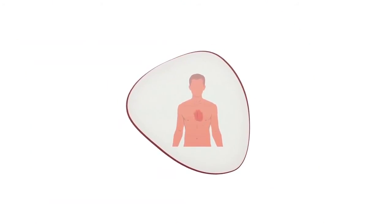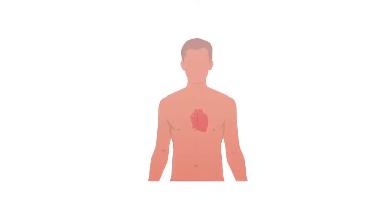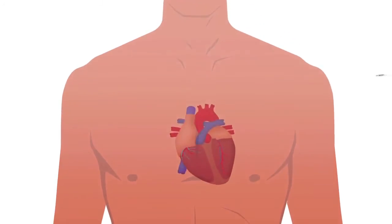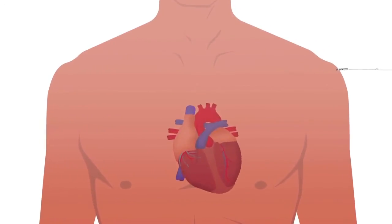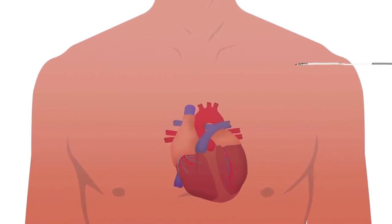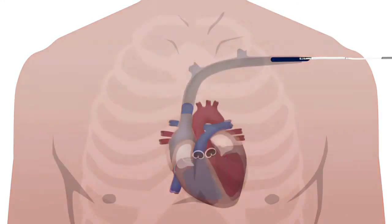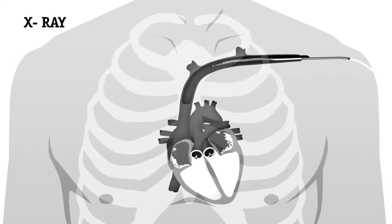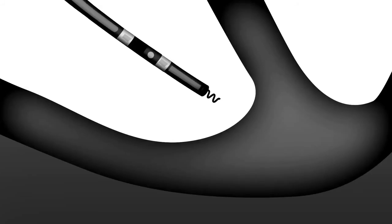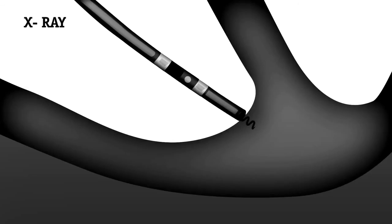The procedure normally takes an hour. It can be longer depending on how many leads the device has. A small incision is made near the collarbone. Using x-ray imaging, the lead or leads from the ICD are inserted through a vein and placed inside the heart where they are fixated to the heart muscle.